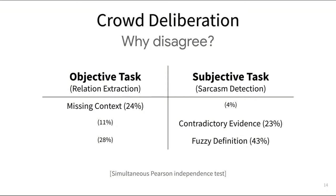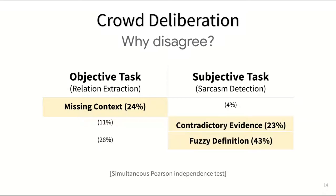In the objective task, workers disagreed six times more often due to missing context compared to the subjective one. On the other hand, contradictory evidence and fuzzy definitions were more common sources of disagreement for the subjective task.